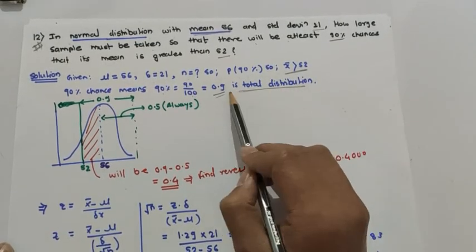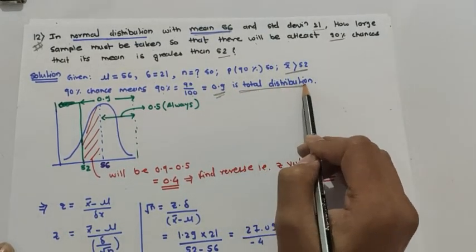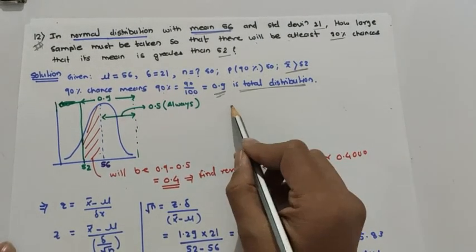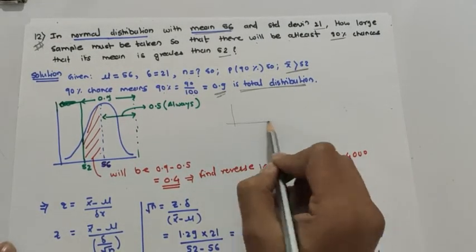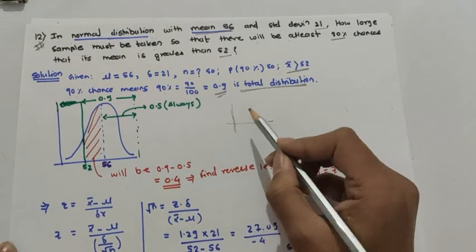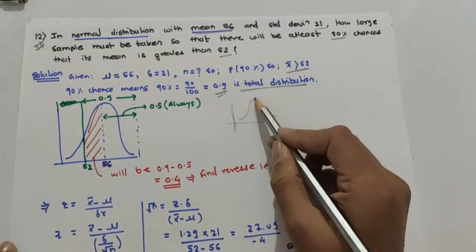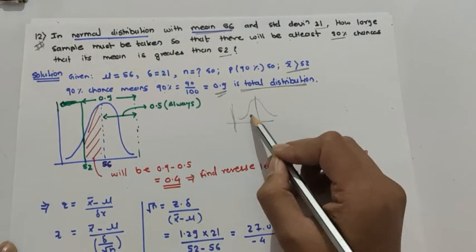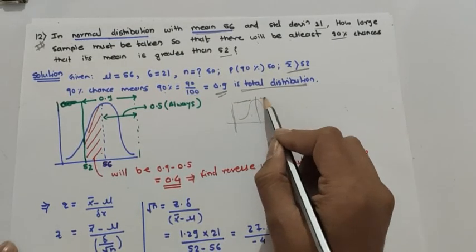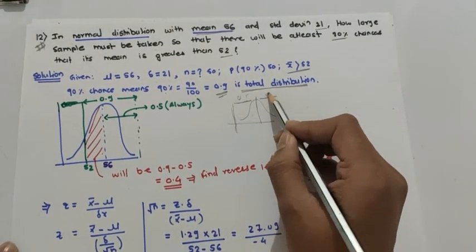90 percent chances means 0.9 of total distribution. In a normal distribution, it is symmetrical about the vertical line — that value is 0.5 on each side, half and half.